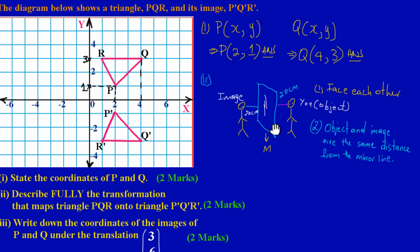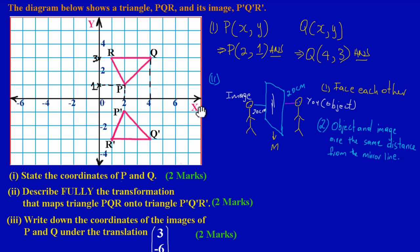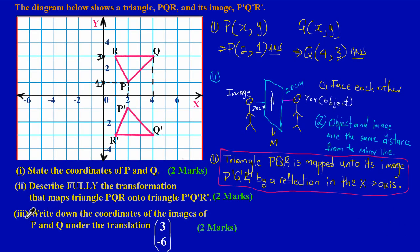Since we have established these two important characteristics, we can state that the transformation that maps PQR onto its image P prime Q prime R prime is a reflection in the x-axis. There are more characteristics to a reflection, but we won't get into all of them now — check out our playlist on Transformation coming soon. Triangle PQR is mapped onto its image by a reflection in the x-axis. When describing a reflection, the important piece of information is the mirror line — in this case, the x-axis.